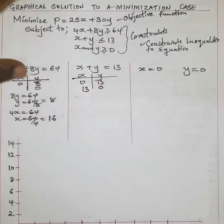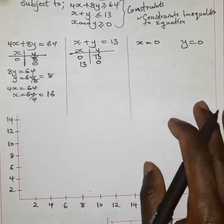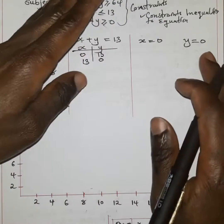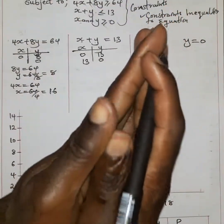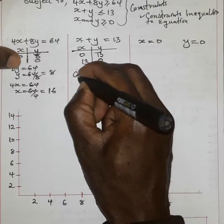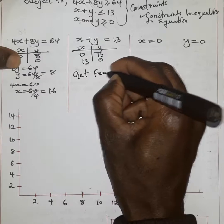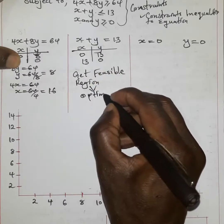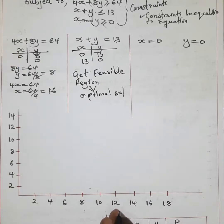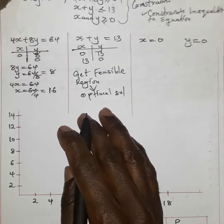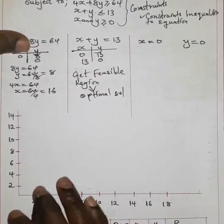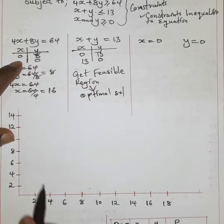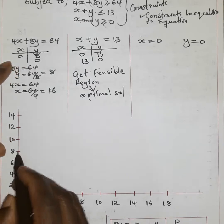We plot the values on the Cartesian plane to be able to determine the feasible region. The feasible region is the region that is going to give us the optimal solution. When X is 0, Y is 8 — the value of X equal to 0 is always along the Y axis, so Y should be 8 as X is 0.